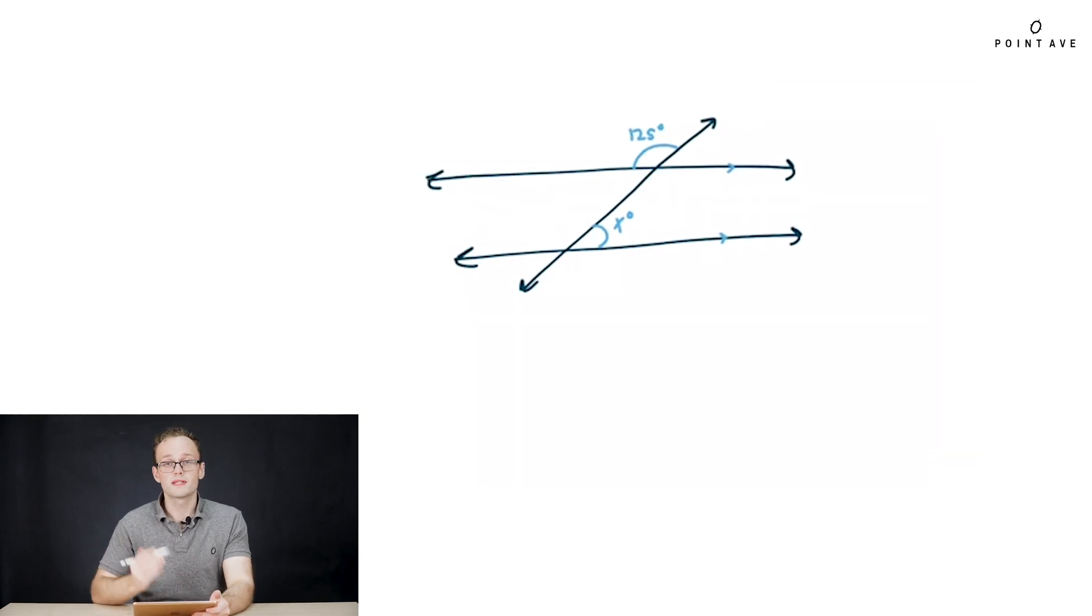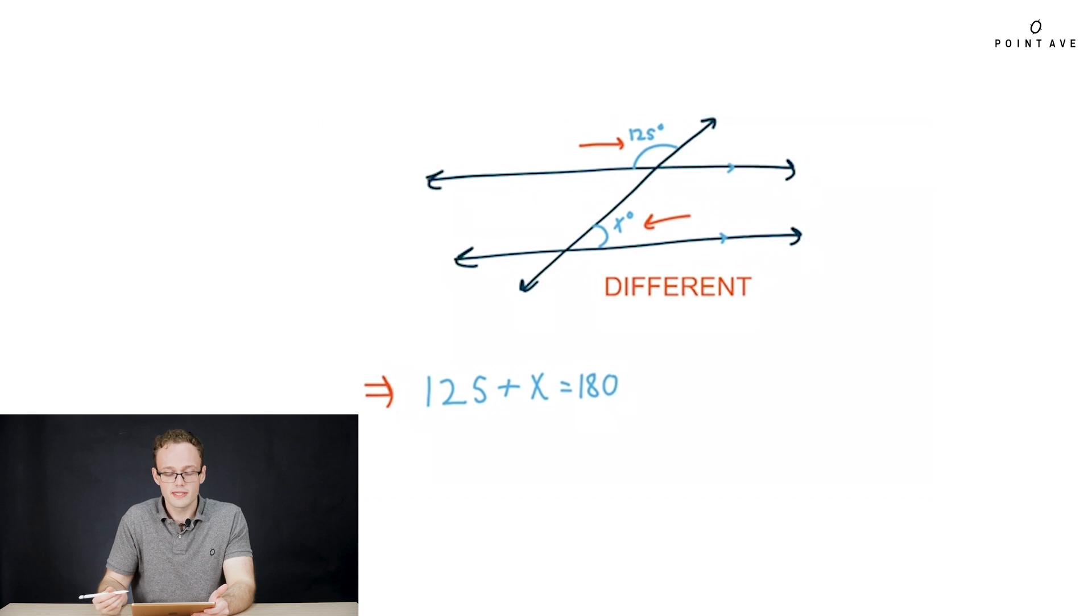Now let's go back to our original problem and relate these two angles using same versus different. So just looking at these angles, we see very clearly they don't look the same, they are different. So that means they have to be supplementary. So we plug into the supplementary equation, 125 plus x has to equal 180. We simply and easily solve for x equal to 55. And it's as easy and quick as that.